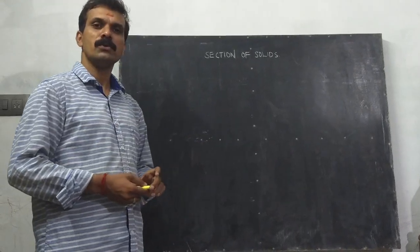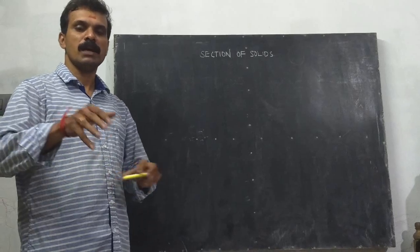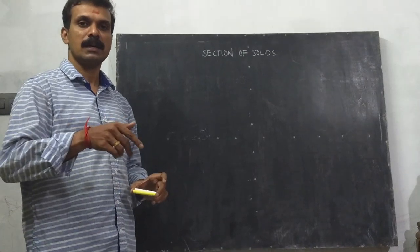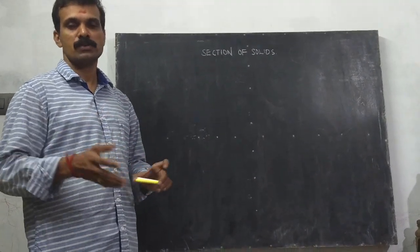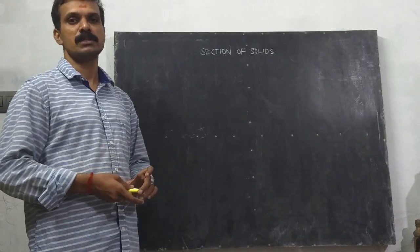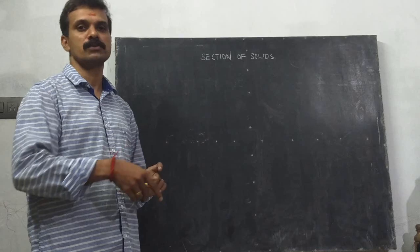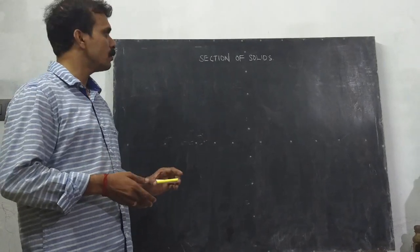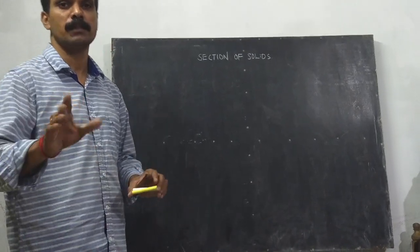So what do you mean by the type of section? Suppose sometimes we have to look into the interior of the solid. What are the portions inside the solid? So for obtaining such information, we have to cut the solid and we have to look into the solid. That is called section. So basically a section plane is nothing but a cutting plane.